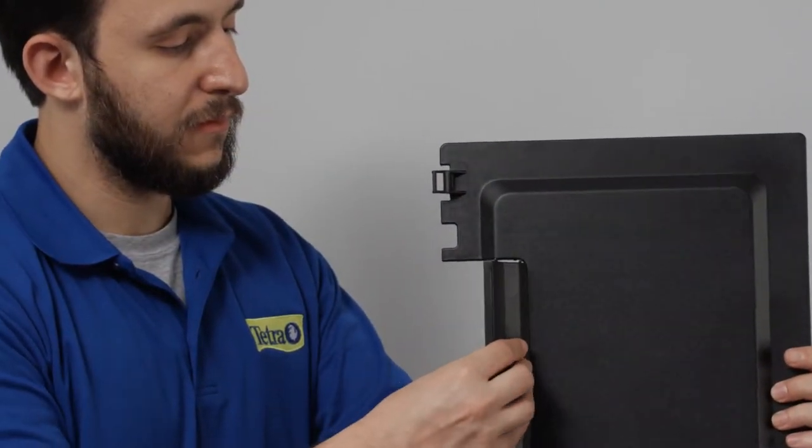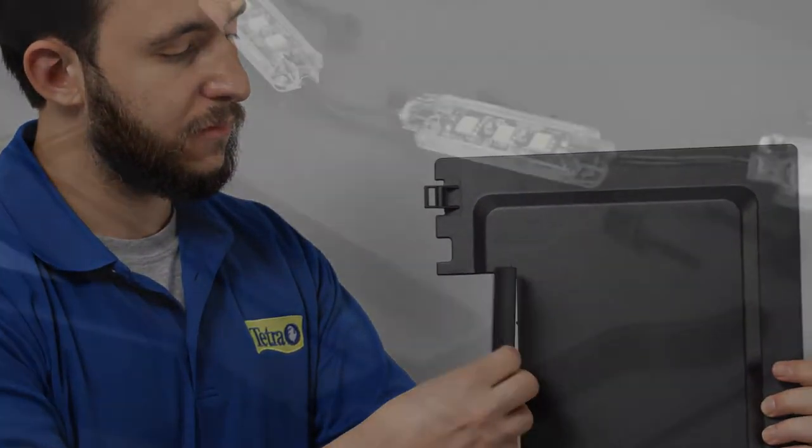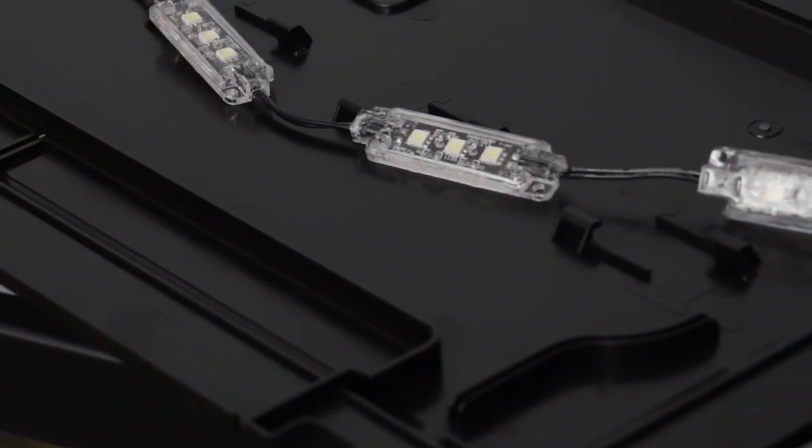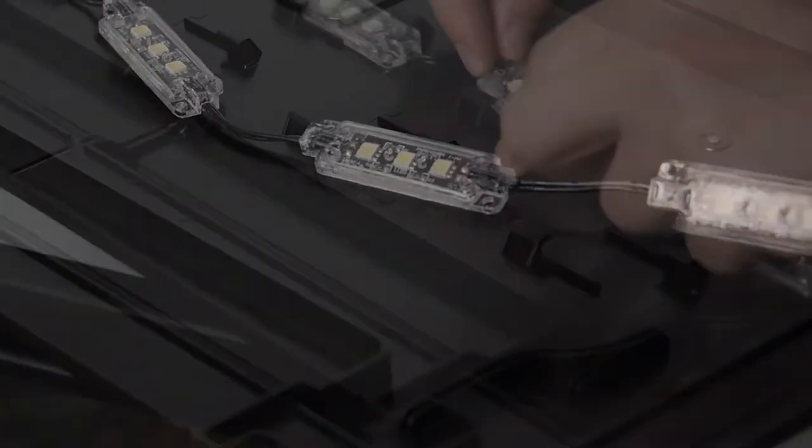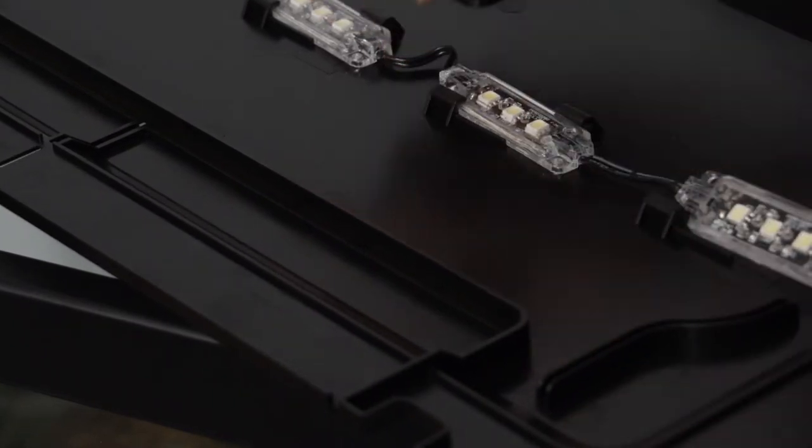First, remove any cutouts needed to fit the filter. Then, place the LED lights into the top of the hood. Slide each light into the track at an angle.